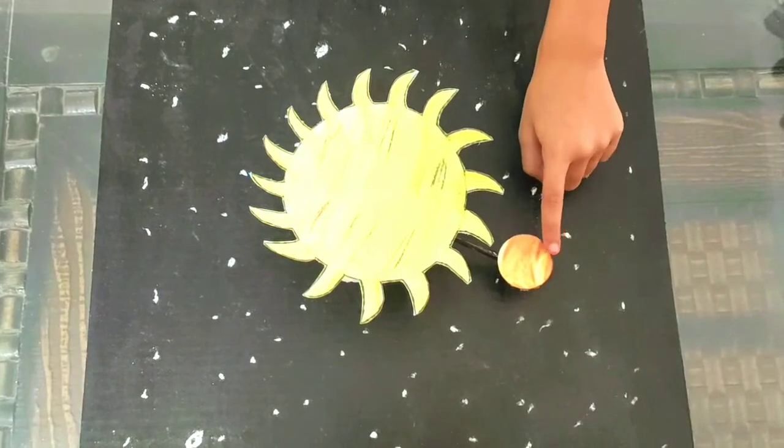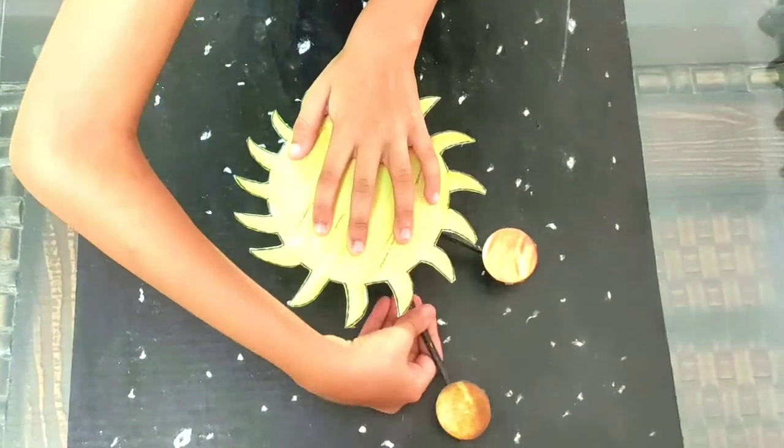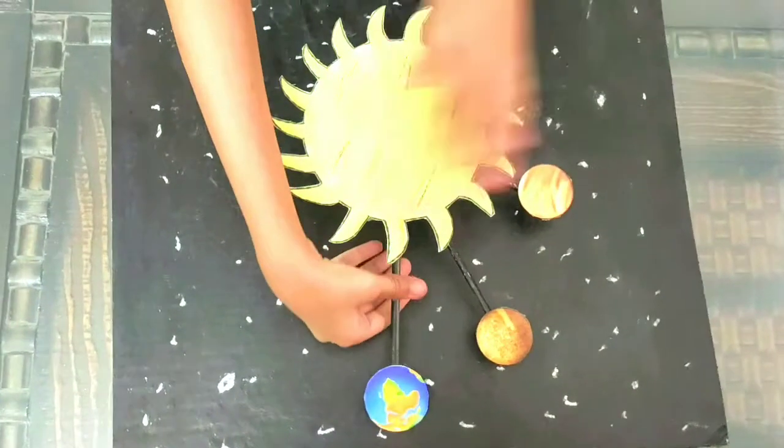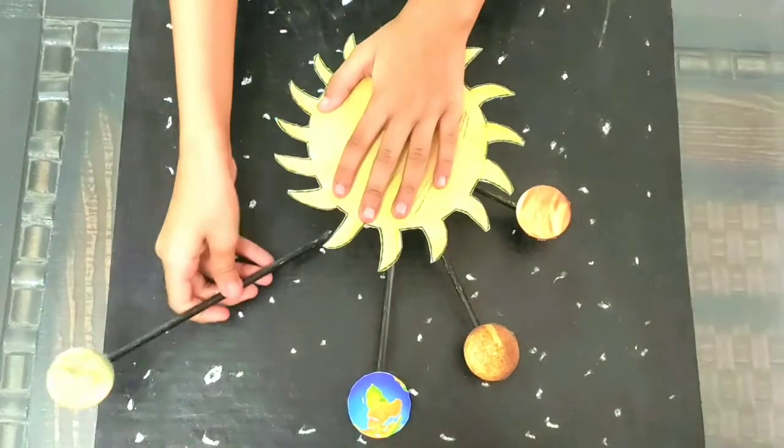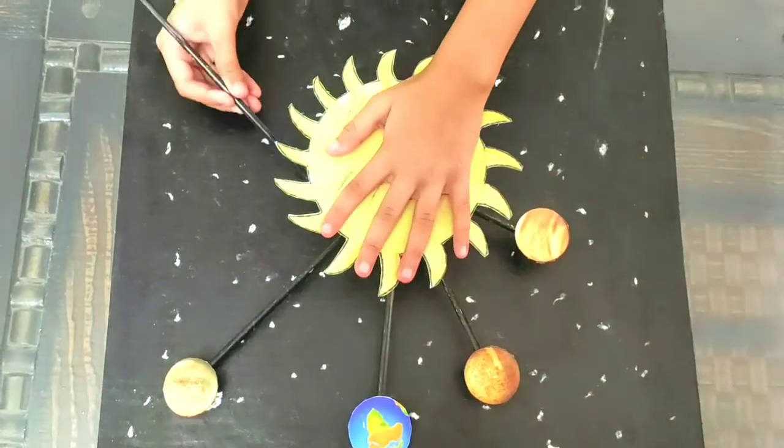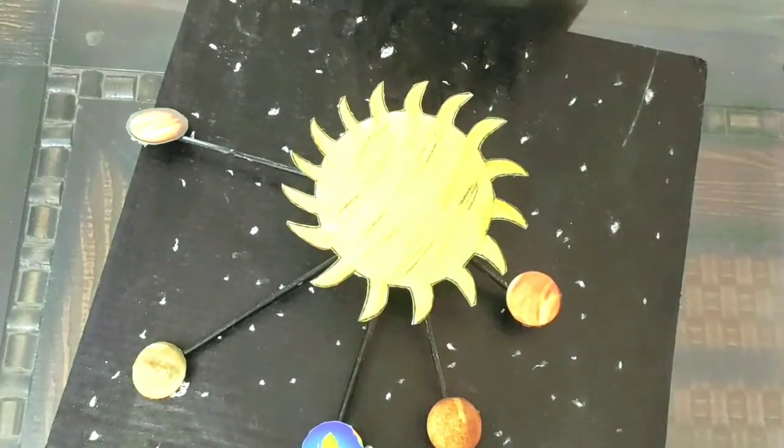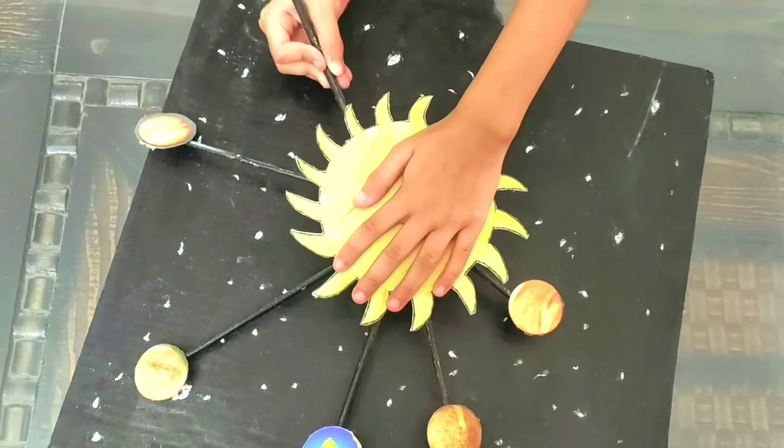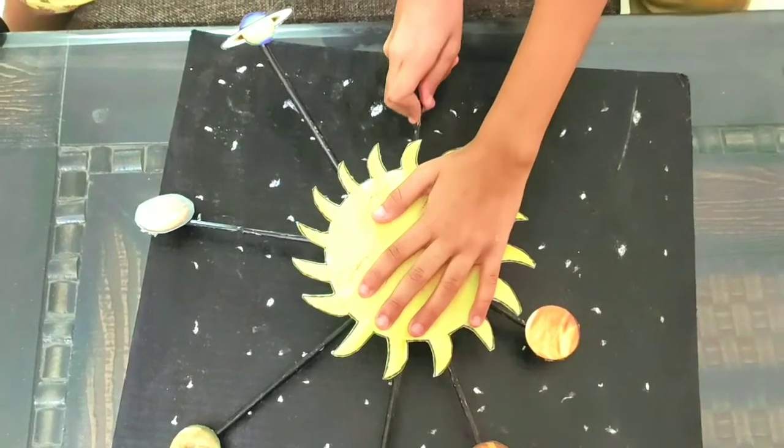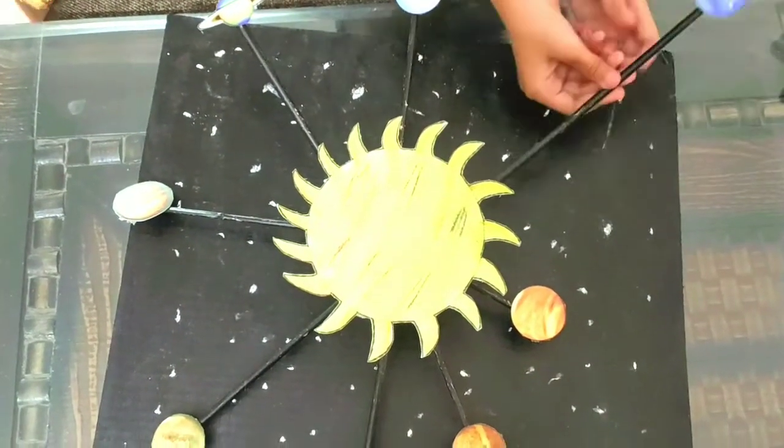This is Mercury, this is Venus, this is our planet Earth, Mars, Jupiter, Saturn, Uranus, and last Neptune.